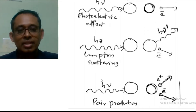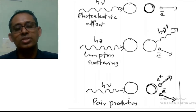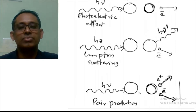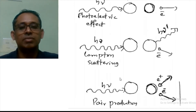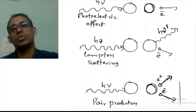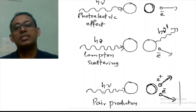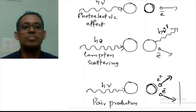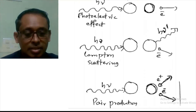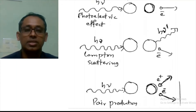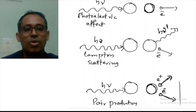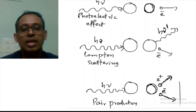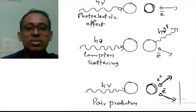The third process is the pair production process. In the presence of a nucleus or an atom, the photon completely disappears and two particles — an electron-positron pair — are formed. This is the pair production process.